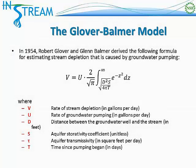One model was developed in 1954 by Robert Glover and Glenn Balmer, and it is summarized by the following formula. The formula looks very complicated, but we can start understanding its components by looking at the variables. V is the rate of stream depletion — this is the outcome we are interested in, measured in gallons per day of water removed from the stream when stream depletion occurs.